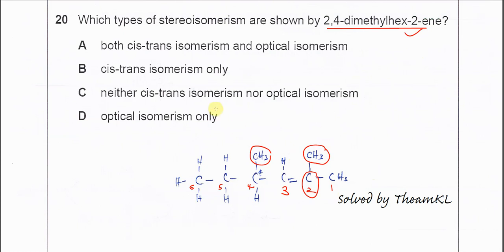After that, you can get the answer easily. For A, both cis-trans isomerism and optical isomerism. So for this one, it will not really form the cis-trans because this C and this C, this C double bond, this carbon has two same groups. So it cannot form cis-trans isomerism. So this one is wrong.